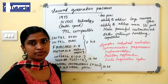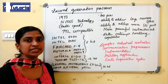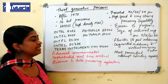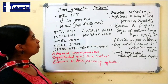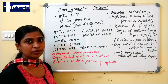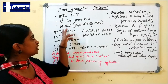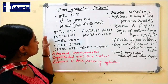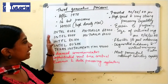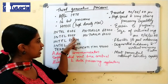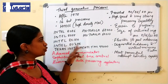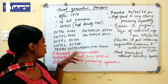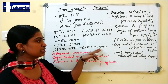Third generation processors were released after 1978. Most are 16-bit processors and they use HMOS — high-density MOS — technology. Some third generation processors are Intel 8086, 8088, 80186, Intel 80286, Motorola 6800, Motorola 68010, and Texas Instruments TMS 99000.